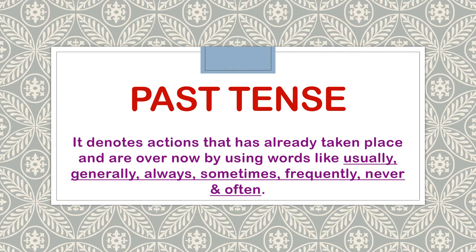Hi students, today let us learn past tense. Past tense generally denotes actions that have already taken place and are over now, using words like usually, generally, always, sometimes, frequently, never and often.